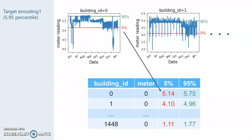This slide shows the first one. As shown in the above figure, the 5th and 95th percentile of the target value was calculated for each building ID and meter, and we used these features. These features can capture roughly maximum and minimum target values of each building and meter.